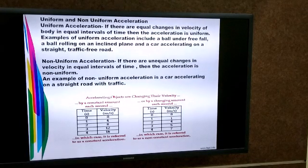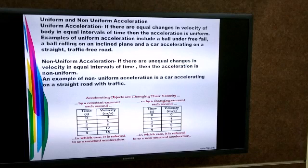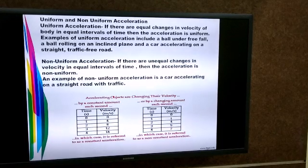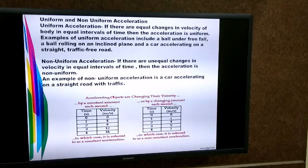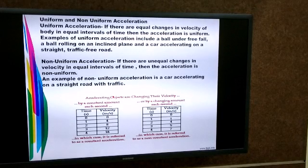A simple example of non-uniform acceleration in daily life: whenever a car is moving on a straight road with traffic, it cannot move with constant velocity — the velocity keeps on changing. Therefore, a car moving on a road with traffic is an example of non-uniform acceleration.